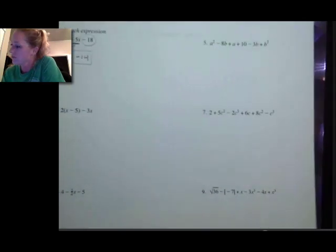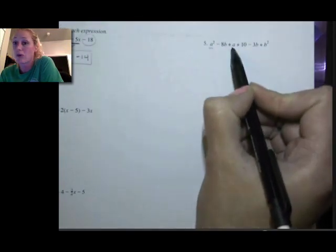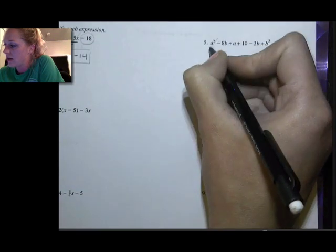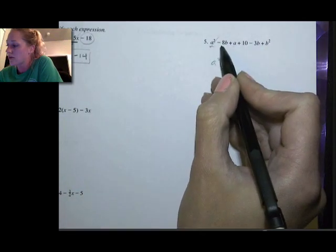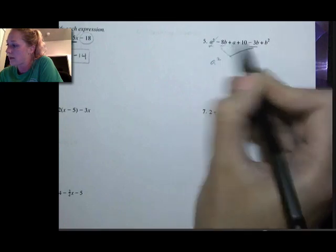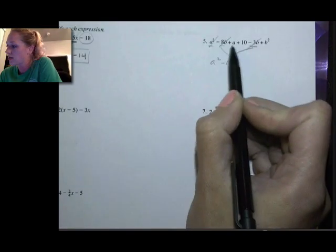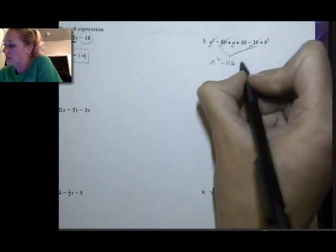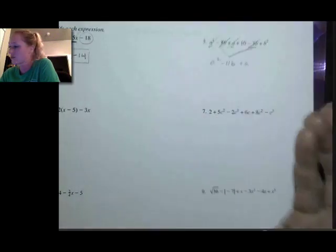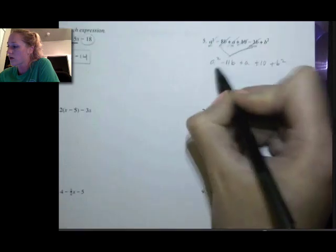Number 5: a squared is my first term — I'm looking for any other a squared. This is not a like term because it doesn't have the squared piece, so that one stays exactly the same. Negative 8b — I'm looking for anything else with just b's. Negative 8b and negative 3b: negative 8 minus 3 is negative 11b. Now I have just a regular a, and I don't see any other a's, so plus a stays just like it is. Plus 10 — no other numbers without variables, so that stays. And then b squared is all I have left.